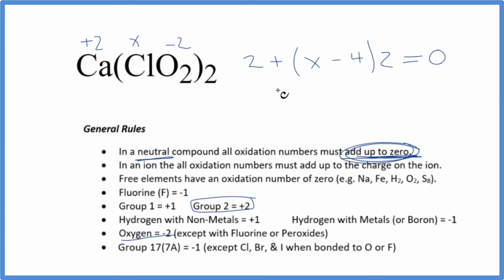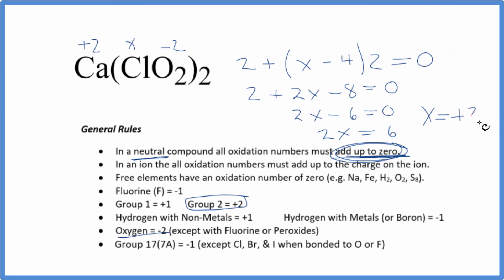Now we just solve for X. So we have two plus two X minus eight, and that'll equal zero. Two X minus six equals zero. Two X will equal a positive six, so X is going to equal a positive three.